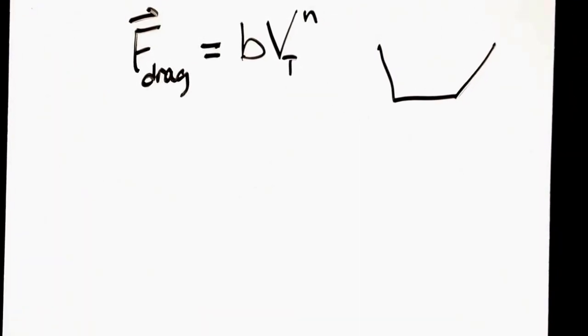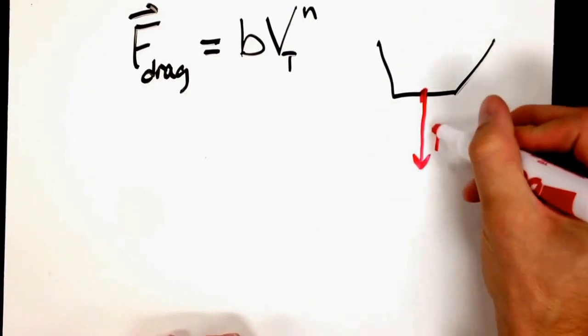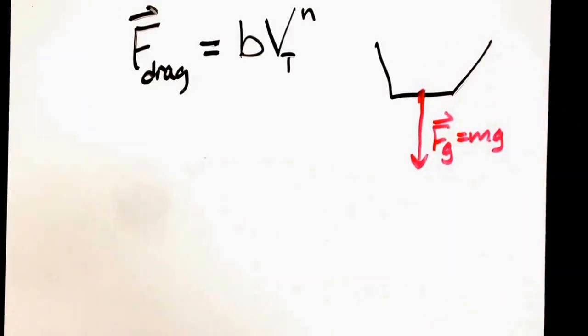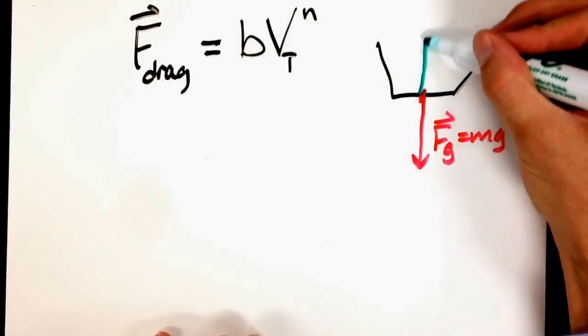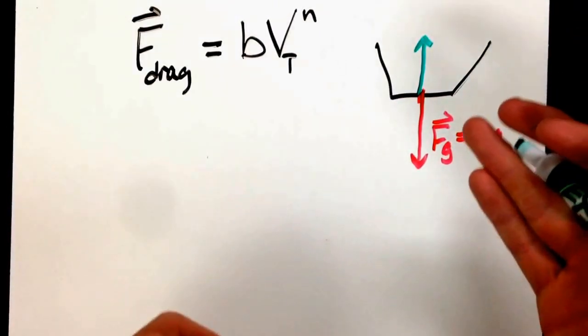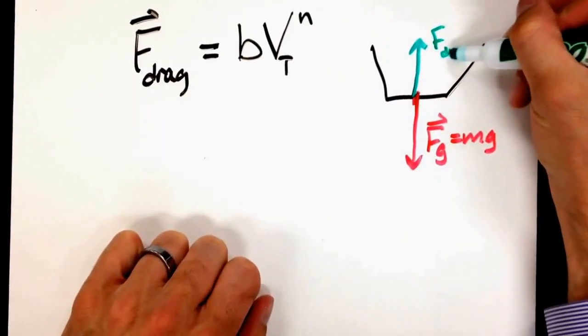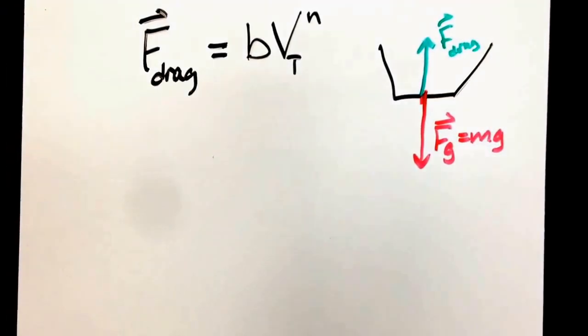At terminal velocity, the forces acting on your object are weight, which is mass times gravity, and the drag force upward. This drag force changes up until terminal velocity. At that point, the drag force is equal and opposite in magnitude to your weight.